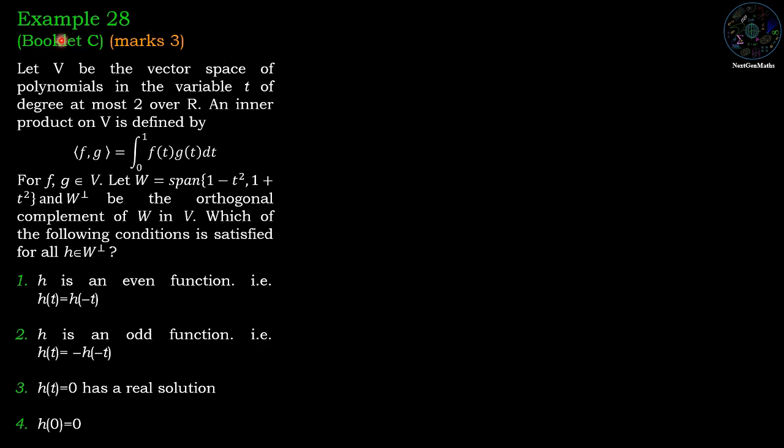Example number 28, Booklet C, Marks 3. Let V be the vector space of polynomials in the variable t of degree at most 2 over R, and an inner product on V is defined by inner product f with g equals integration 0 to 1 f(t)g(t)dt.